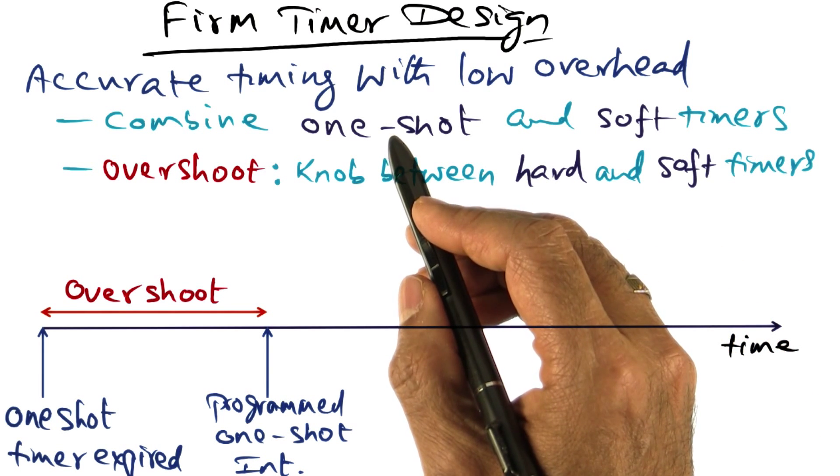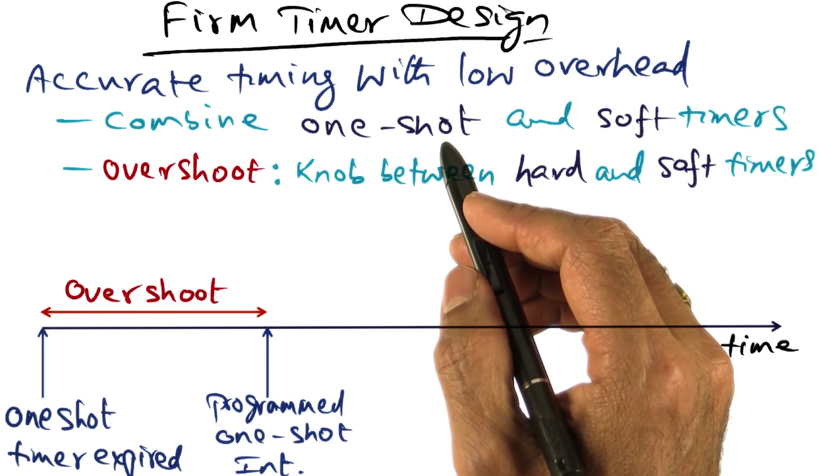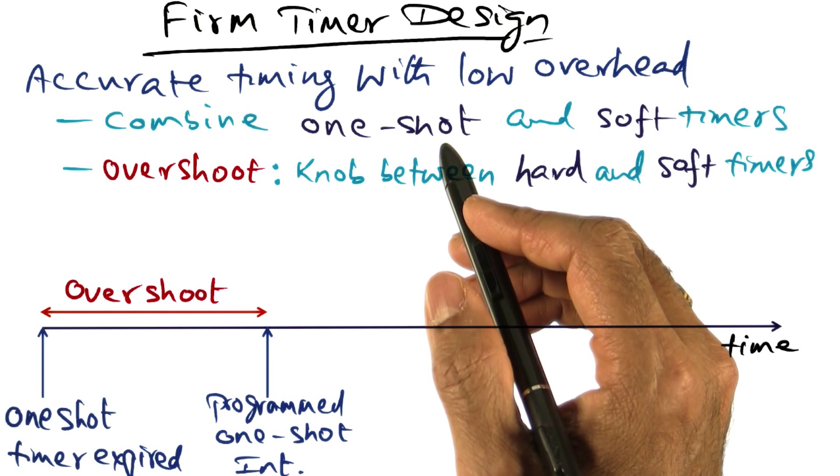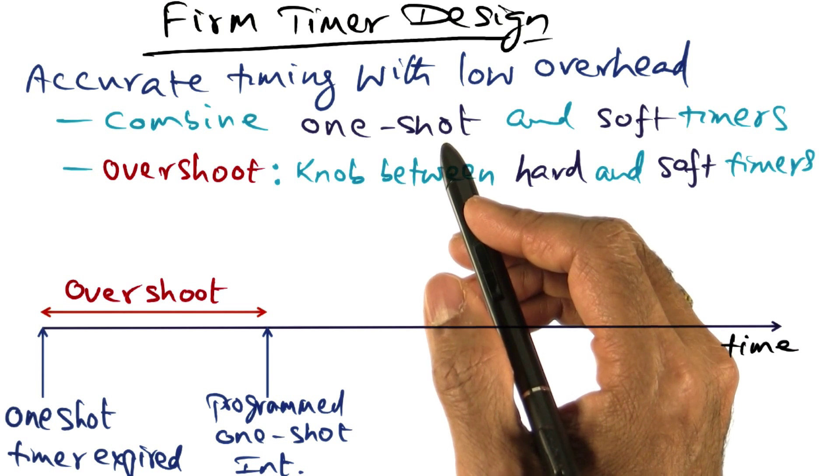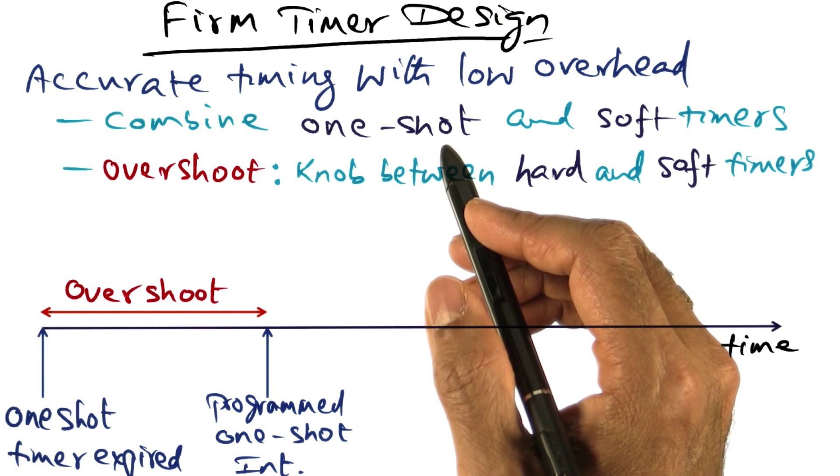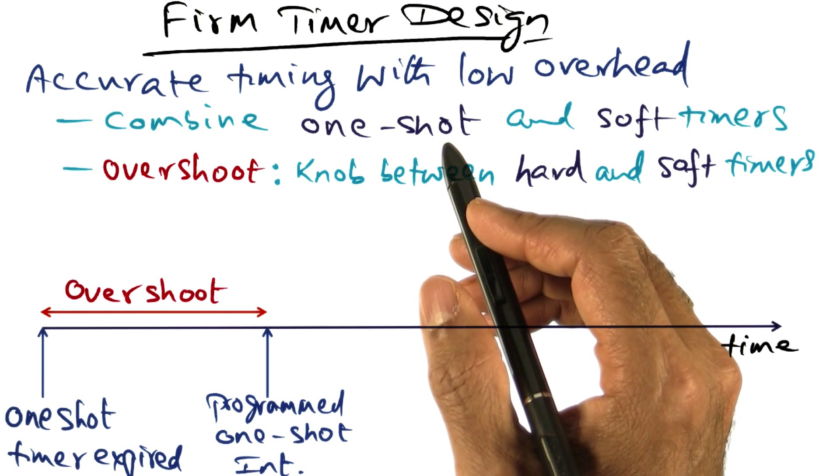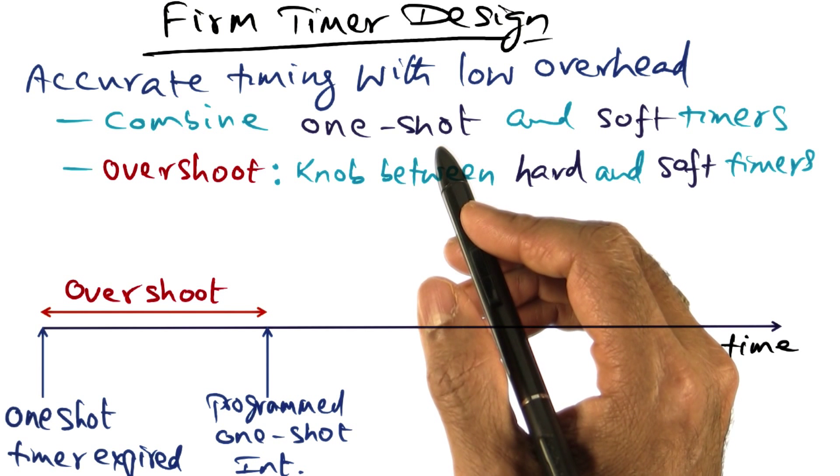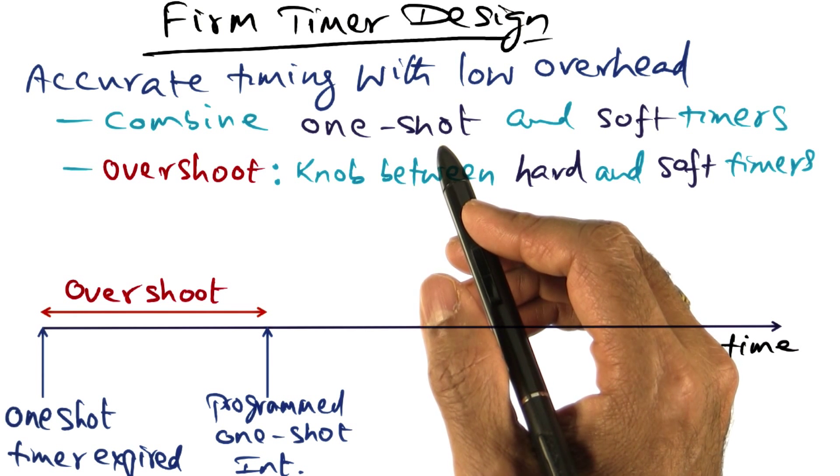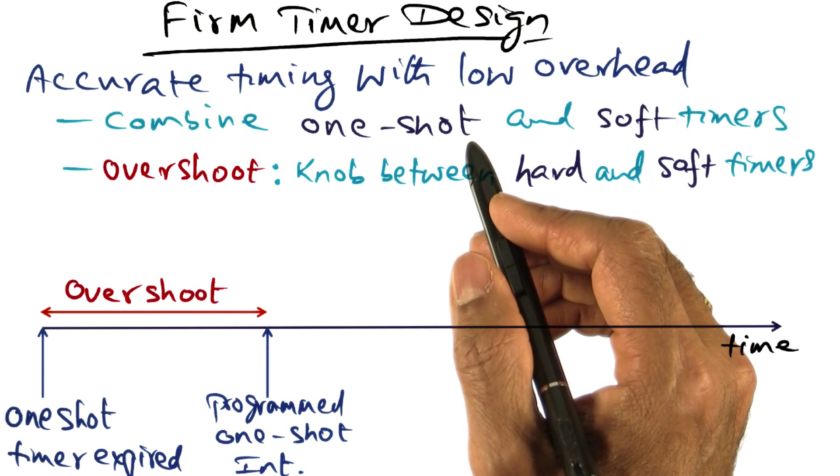As I mentioned, the one shot timer's virtue is the fact that we can have the timer interrupt happen exactly at the time that we want. In other words, we get rid of the timer inaccuracy that plagues normal timer design in general purpose operating systems.